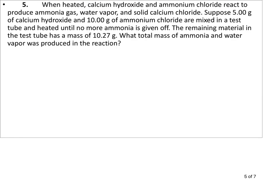Got another reaction going on here. Calcium hydroxide, ammonium chloride, react to produce these other things. So we got 5 grams of calcium hydroxide and 10 grams of ammonium chloride. So we start with 5.00 grams and 10.00 grams, meaning we have 15.00 grams to start with.